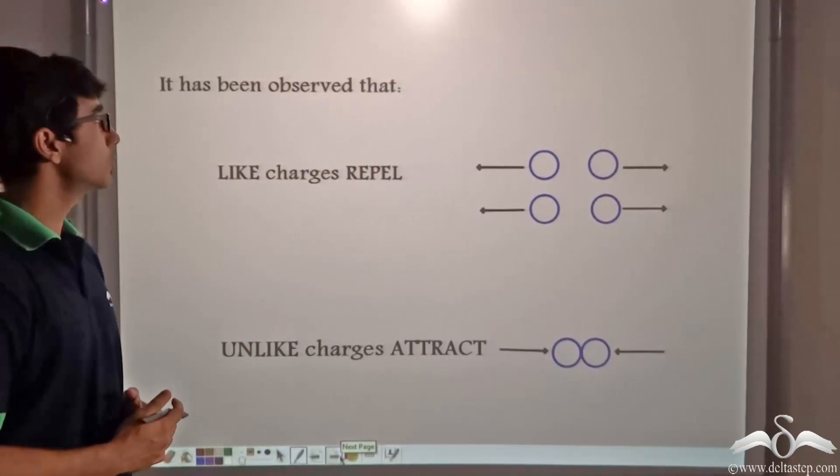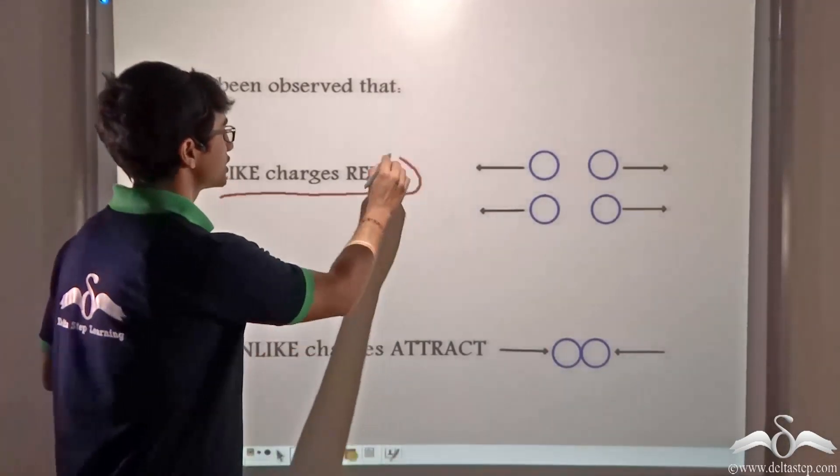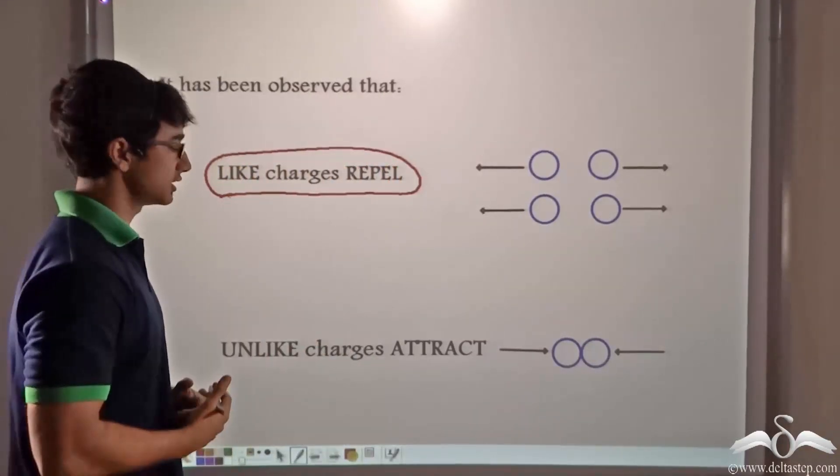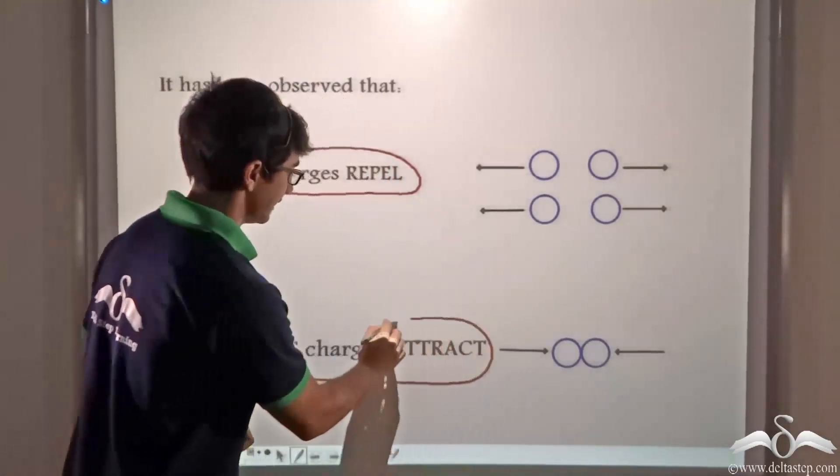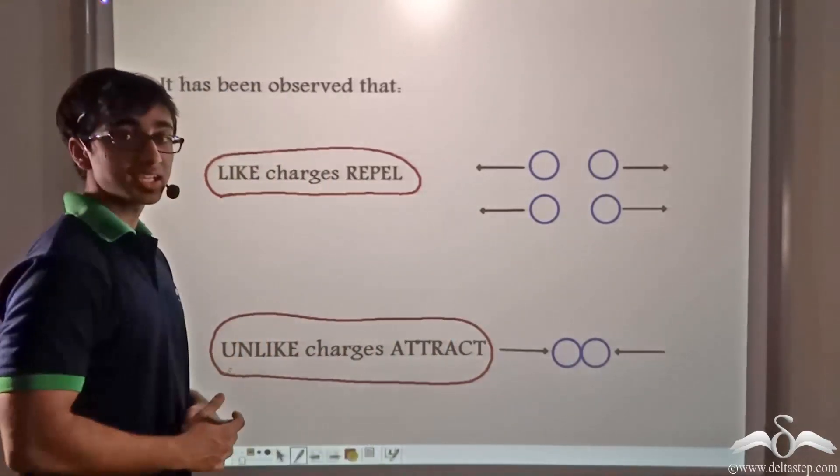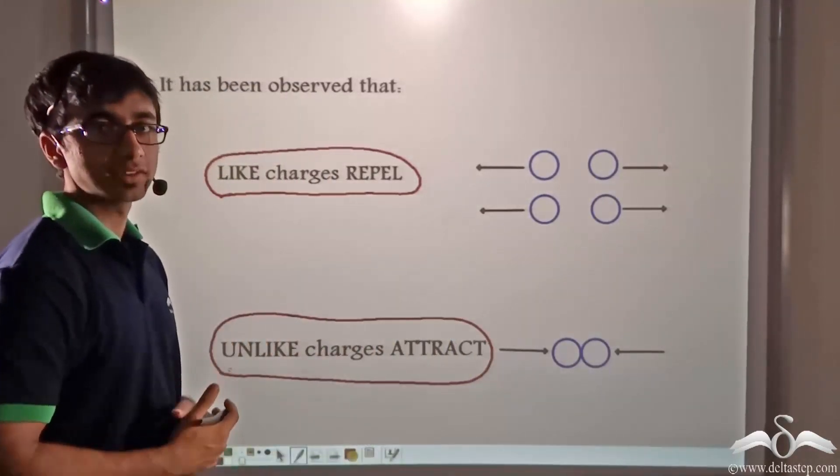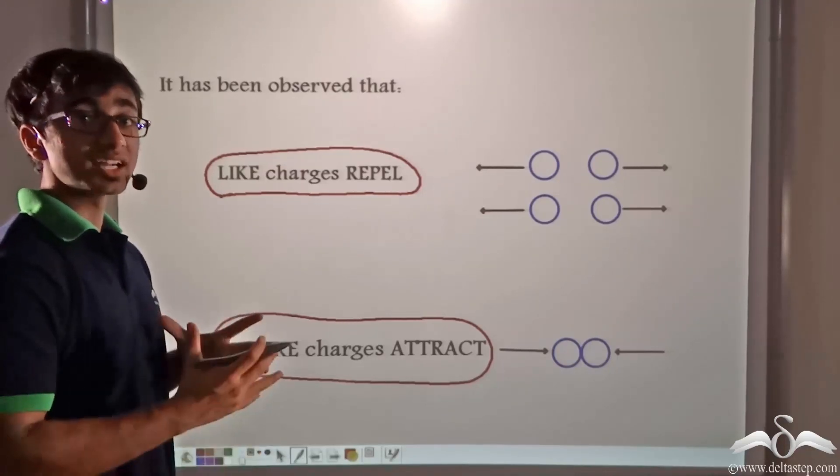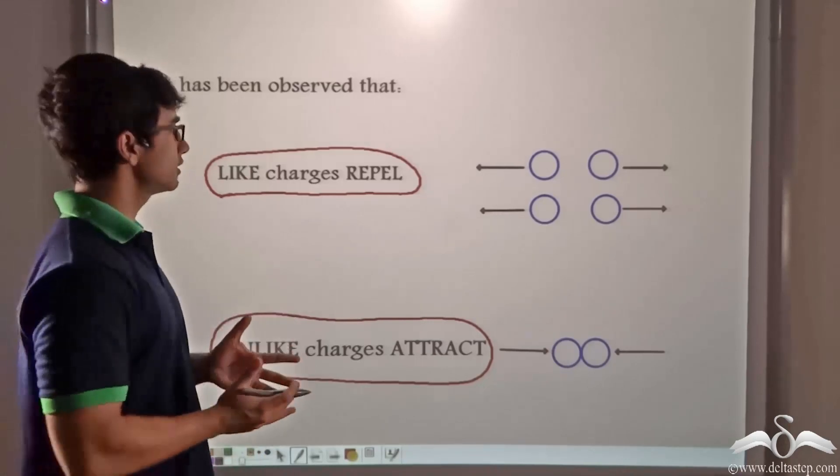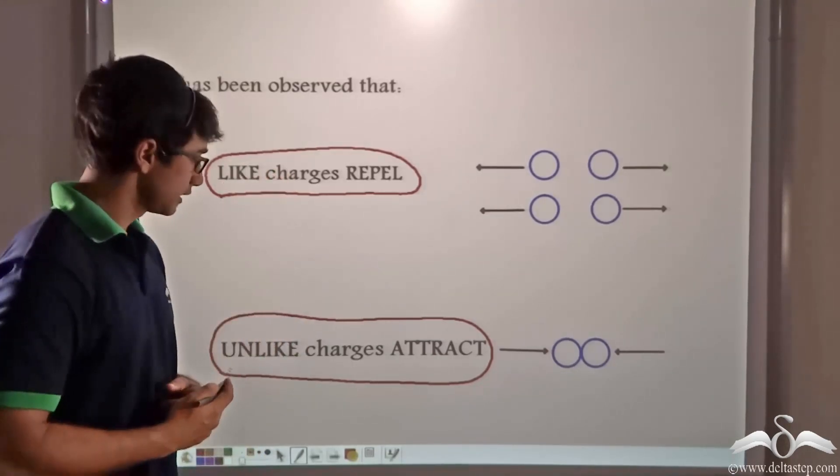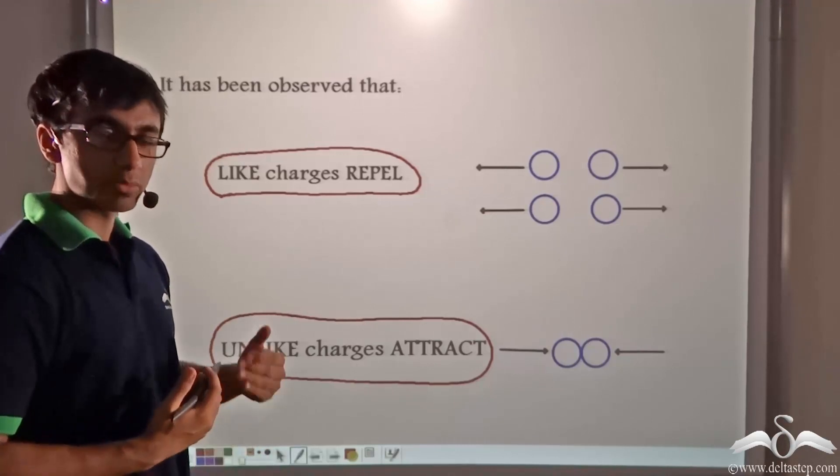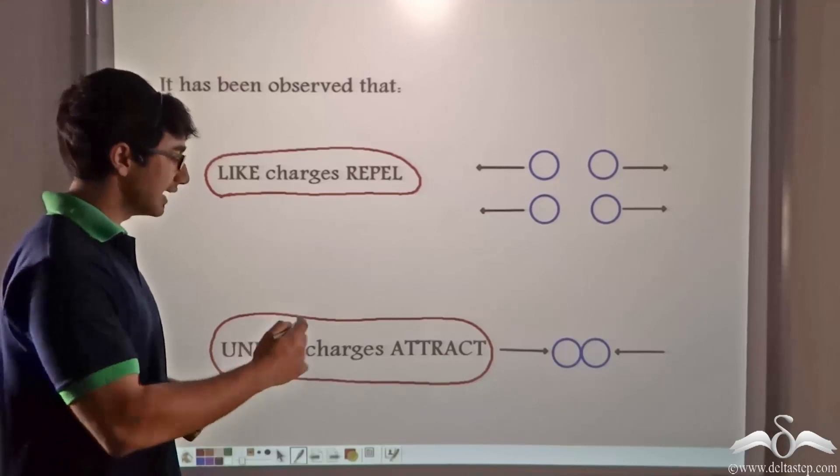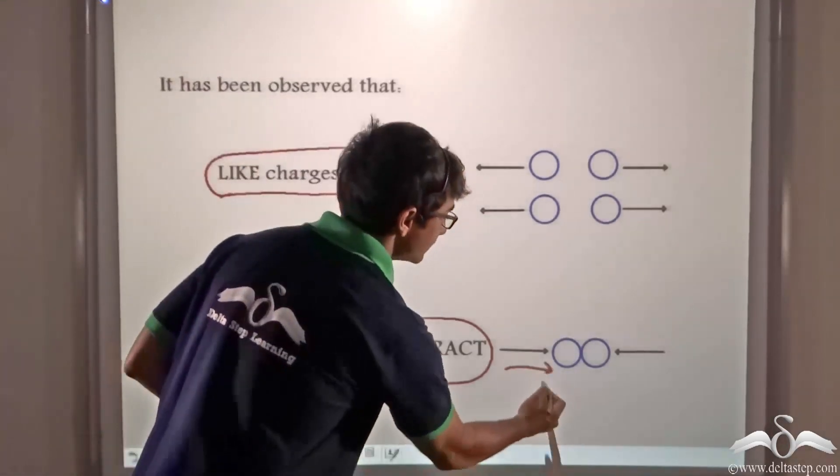It has been found out that like charges or charges that are similar in nature, they repel each other. And unlike charges, that is, charges that are unlike one another, they attract. So in the case of two glass rods or two ebonite rods, the charges that developed on them were like charges. So they repelled one another. But in the case of the glass rod and ebonite rod, the charges that developed on them were unlike charges. So that is why they attracted each other.